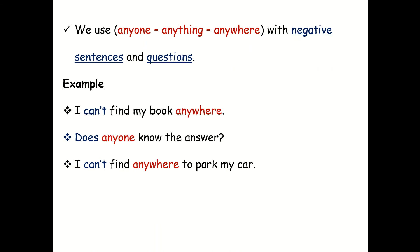We use anyone, anything, anywhere with negative sentences and questions. Example: I can't find my book anywhere. Does anyone know the answer? I can't find anywhere to park my car.